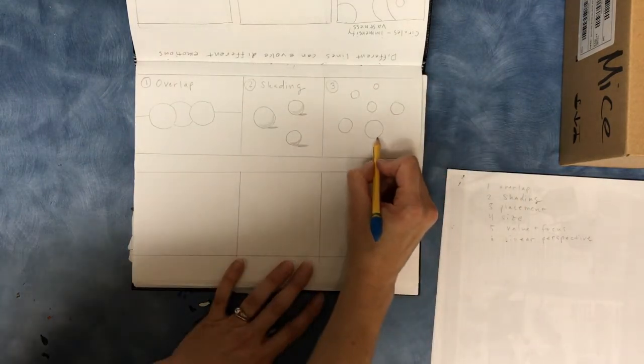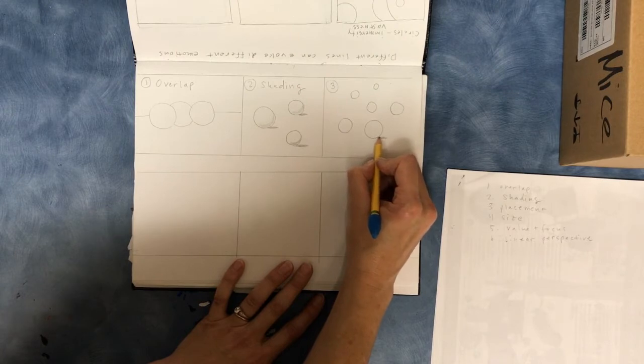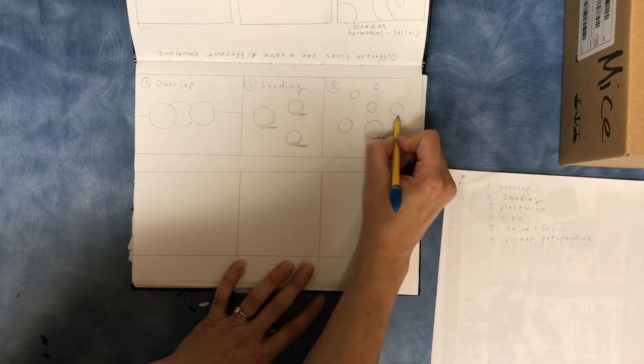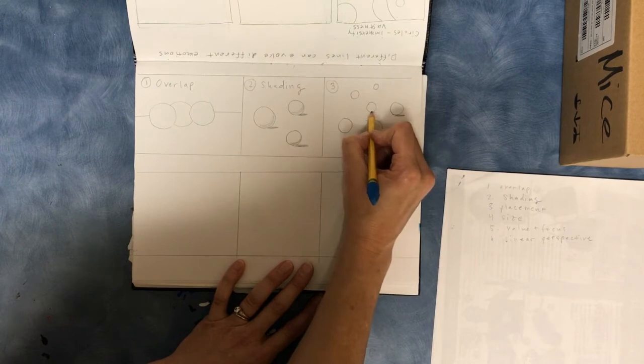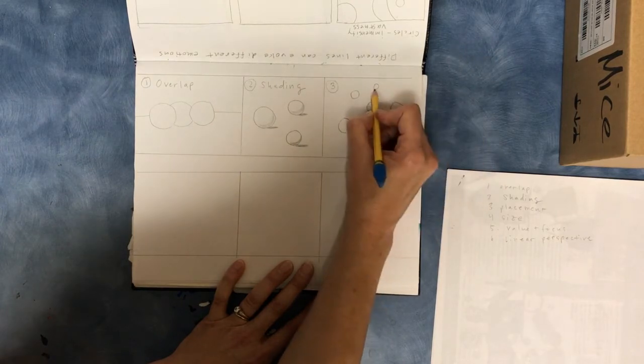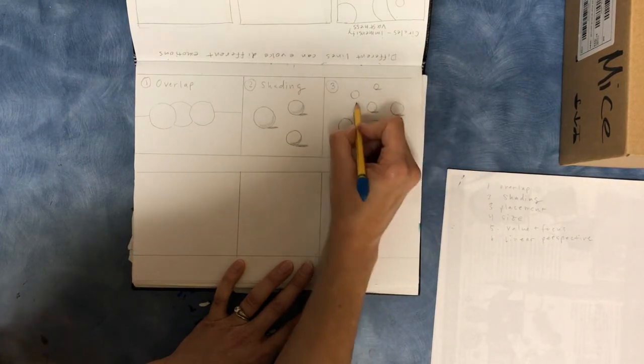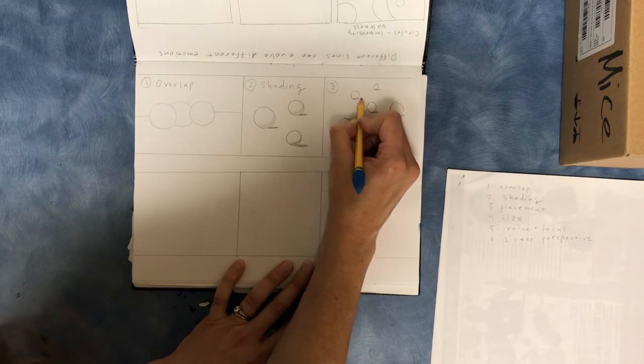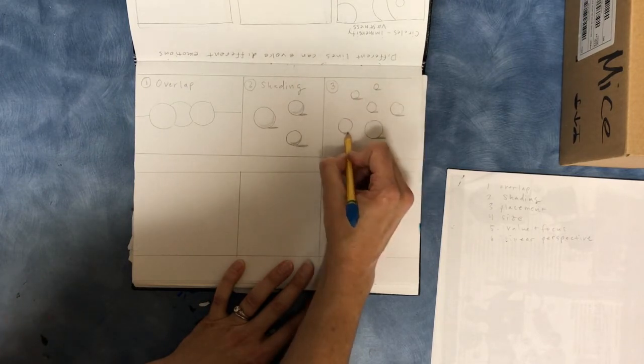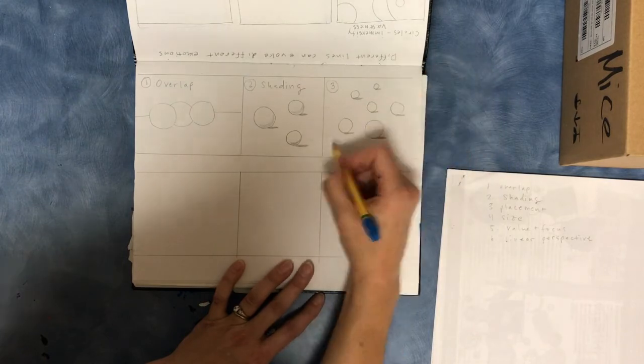And then you're just going to put a little shadow underneath them so they look like they're sitting on something and not just floating in outer space. Oh, I forgot to write placement.